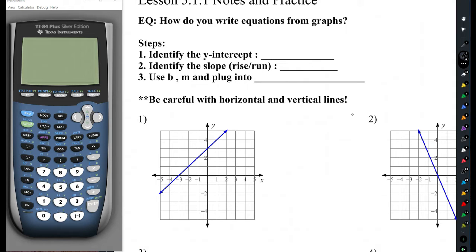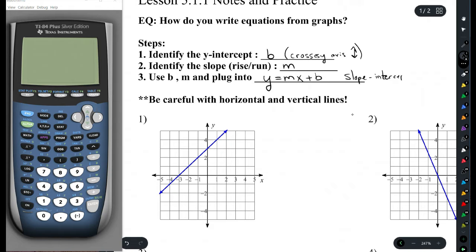First of our steps, identify the y-intercept. You should remember that that is our b value, and that's where the graph crosses the y-axis. Identify the slope, which is the rise over run, also known as m, and we're going to use b and m and plug them into our favorite y equals mx plus b. That is what we call slope-intercept form.